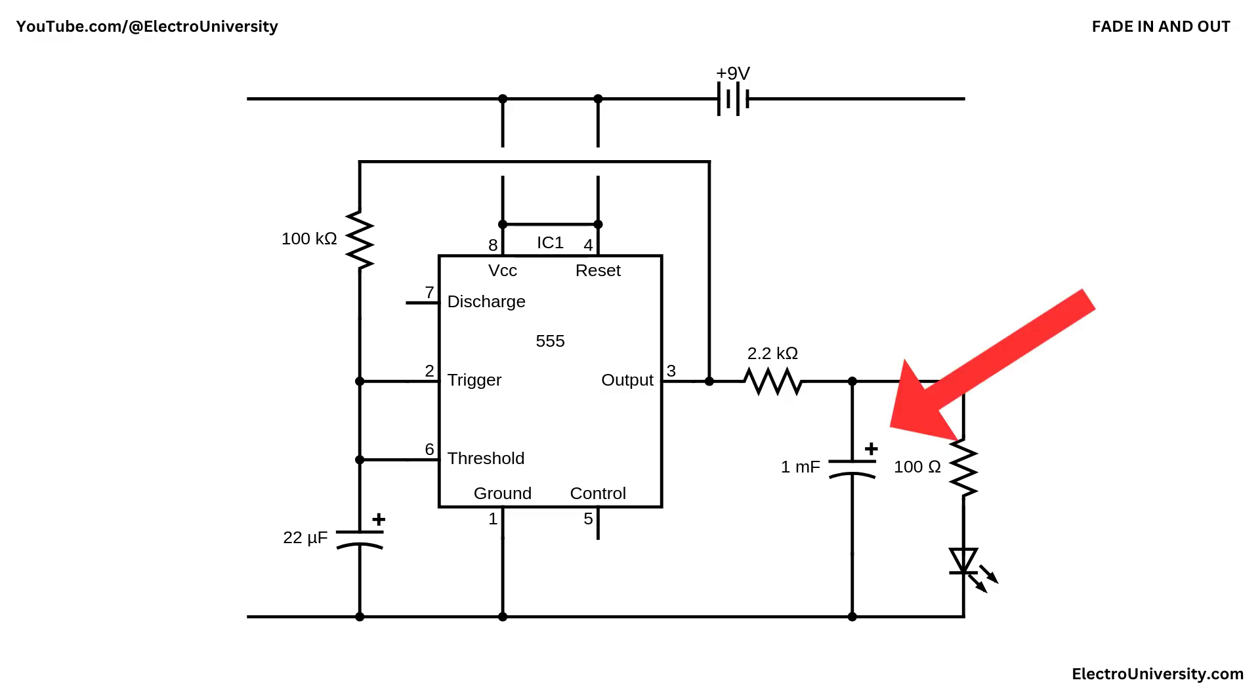The capacitor's large value ensures that the fading happens slowly and visibly, rather than in a rapid flash. This circuit is powered by a 9-volt battery, and pin 4 or reset is tied to pin 8 or VCC to keep the IC active, while pin 5 or control is left unconnected but can be used for further modulation if needed.